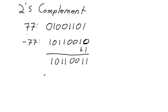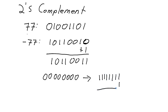In the 2's complement system, there is only one representation of 0. If we take the 8-bit 0 — all 0 bits — and perform the 2's complement operation by flipping all bits to get all 1's, then adding 1, we carry the 1 through all the way to the end. We carry a 1 out of the 8-bit system, but since it's only 8 bits, we discard that carry. The result is still all 0's, confirming there is only one representation of 0.